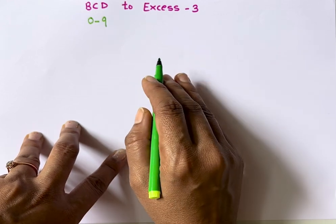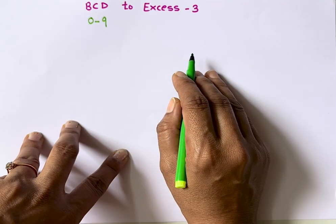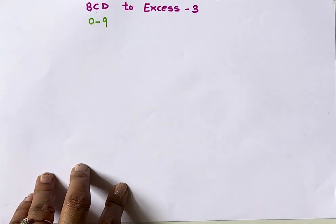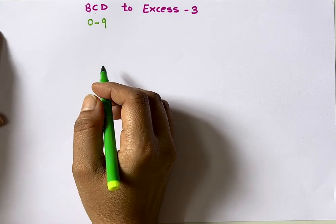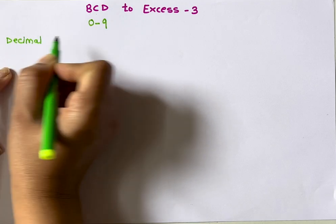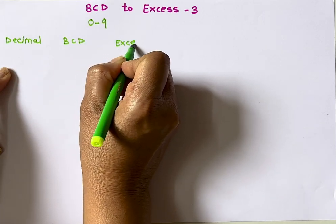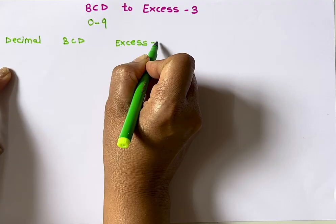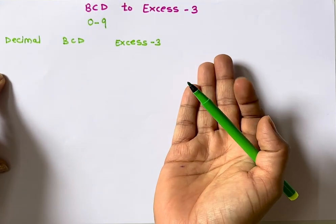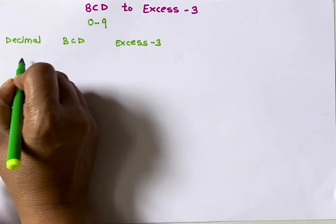Why is it necessary to convert BCD into XS3? Because it is used in systems like calculators, digital displays, and error detection circuits where efficient number handling is required. XS3 means BCD number plus 3 — so the XS3 equivalent of 0 is 3, the XS3 equivalent of 1 is 4, and so on.